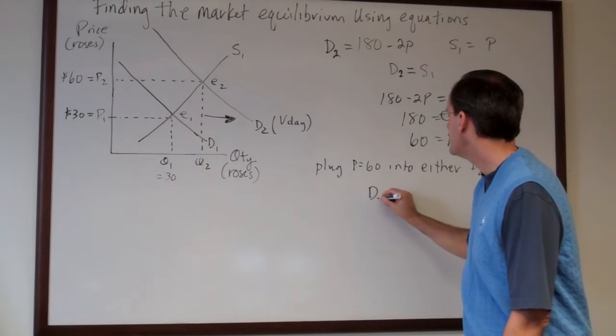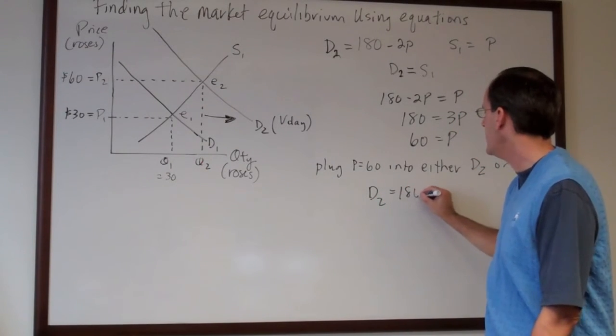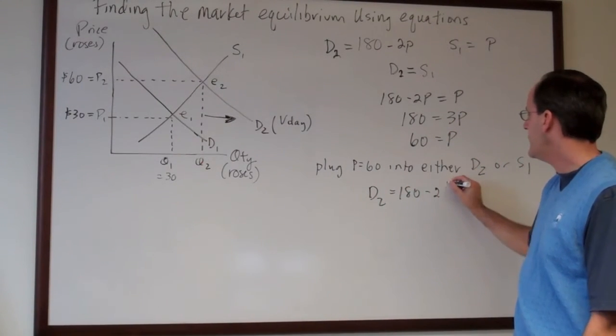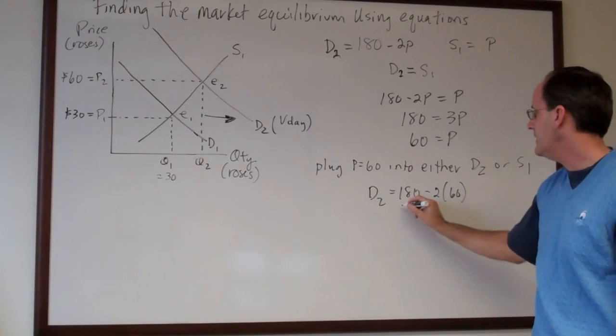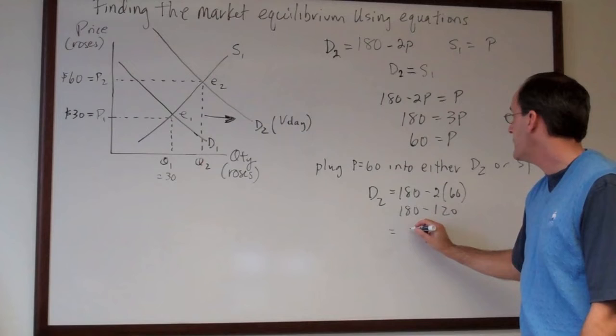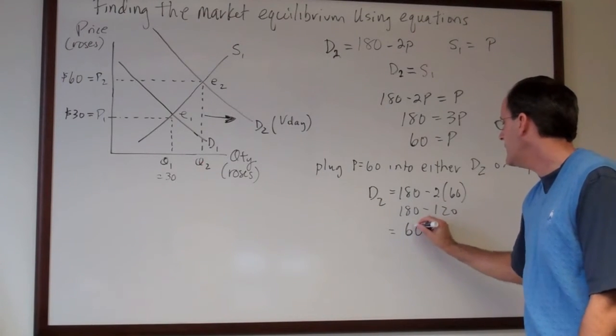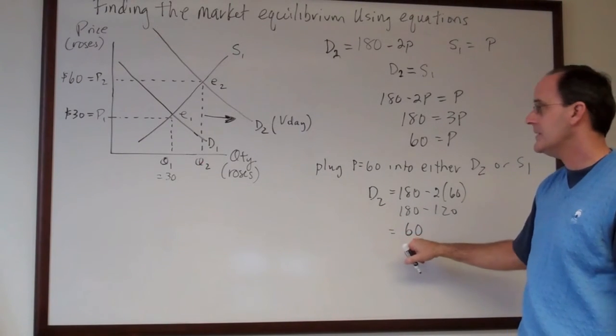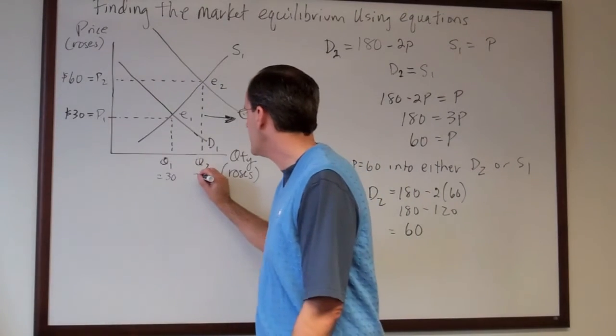So we got d2 is equal to 180 minus 2 times the new price which is 60 which is 180 minus 120. And so in this case the new quantity for dq is 60. I'll go ahead and write that right here.